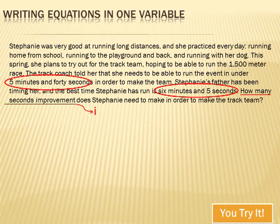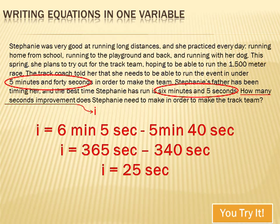Now we only have three things to look at — no mass of words to confuse us. We're solving for improvement, so let's call it I. I equals her current time of 6 minutes and 5 seconds minus the time she needs to run, 5 minutes and 40 seconds. Converting both times into seconds: I equals 365 seconds minus 340 seconds. So the improvement Stephanie needs in the 1,500 meter race is 25 seconds.